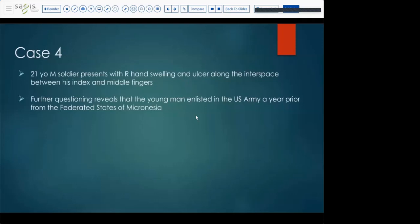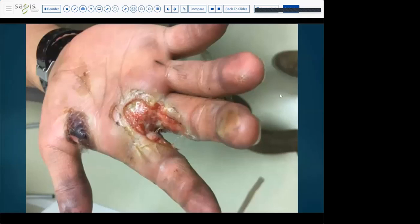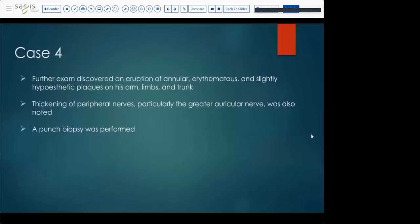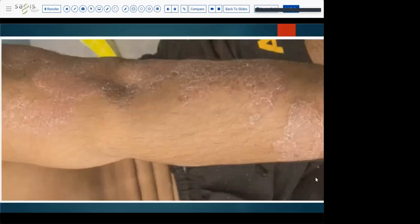Case number four is a 21-year-old male soldier who presents with right hand swelling and an ulcer along the inner space between his index and middle fingers. Further questioning revealed that the young man enlisted in the army a year prior from the Federated States of Micronesia. You can see there pretty profound clinical image of that ulcer kind of in the web space. Further exam, you kind of look around, he's got this eruption of annular erythematous, slightly hypoesthetic plaques on his arms, limbs, and trunk, even had thickening of peripheral nerves, particularly the greater auricular nerve. So a punch biopsy was performed of one of the representative somewhat excoriated plaques on his arm.